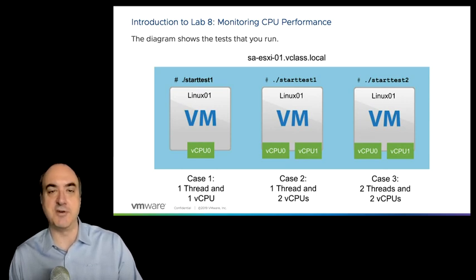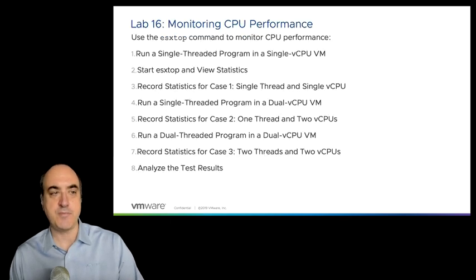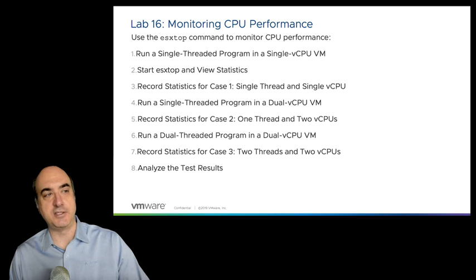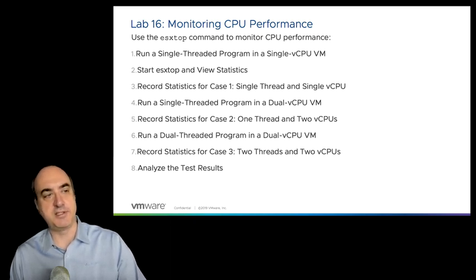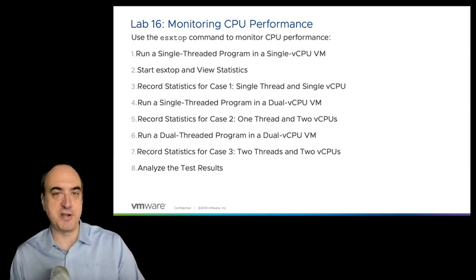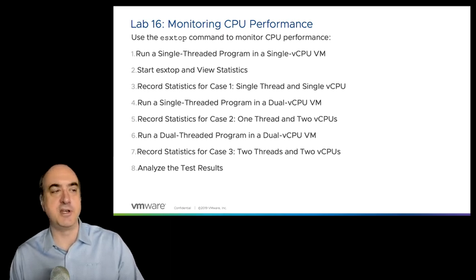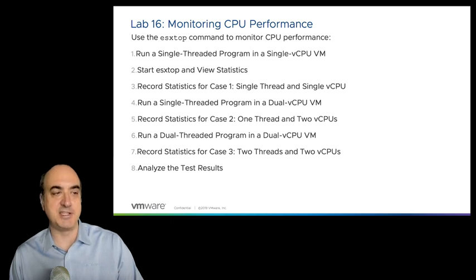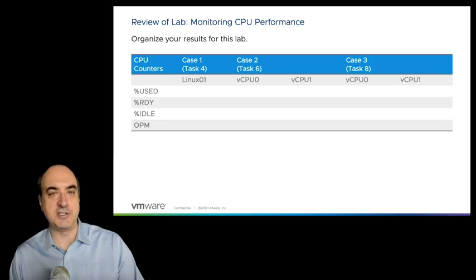You're going to see how a VM uses its extra virtual CPU when running a single-threaded application — will it actually be able to leverage that extra CPU and do more work? Then you'll stop start_test_one and run start_test_two, which is two instances of MySQL. With two virtual CPUs, there should be a difference. You'll need to get everything prepared, run the single-threaded program, start ESXtop, record the statistics for each case, and write the information down.